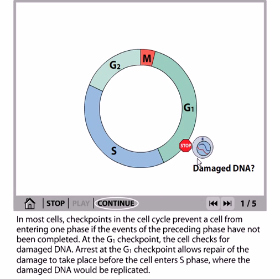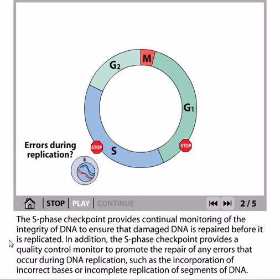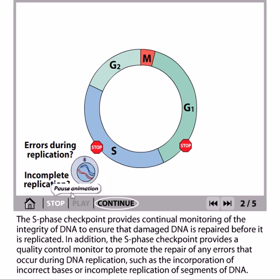The G1/S checkpoint helps the cell determine whether the DNA is properly made and whether it contains any damage. If there is any kind of damage inside the DNA, this checkpoint will block the cell from passing through. The S phase checkpoint provides continual monitoring of the integrity of the DNA, ensuring that damaged DNA is repaired before it is replicated, because in S phase the DNA sequence is being duplicated, so it checks whether what is being duplicated is perfect or not.